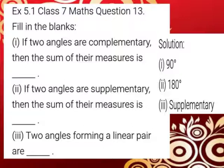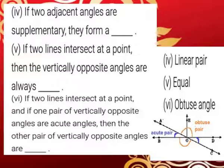Third subdivision: Two angles forming a linear pair are supplementary. Fourth subdivision: If two adjacent angles are supplementary, they form a linear pair. Fifth subdivision: If two lines intersect at a point, the vertically opposite angles are always equal. Sixth subdivision: If two lines intersect at a point and one pair of vertically opposite angles are acute, then the other pair of vertically opposite angles are obtuse angles.